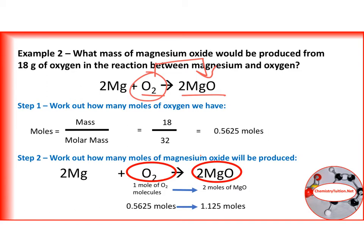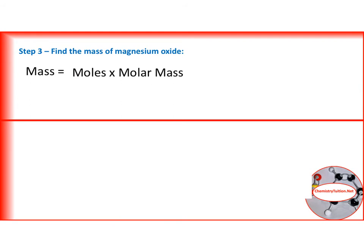Final step is finding the mass of magnesium oxide, which is the number of moles of magnesium oxide, which we have just discovered as being 1.125 times the molar mass of MgO, which is 24 plus 16, which gives 43.3 grams.